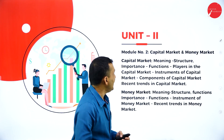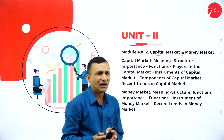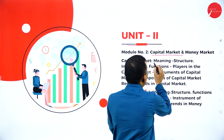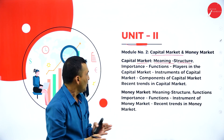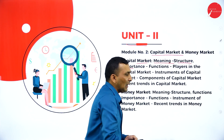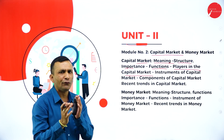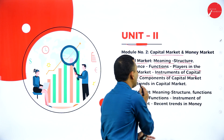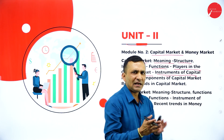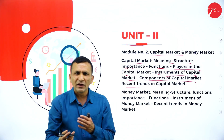Moving to Unit 2 — Capital Market and Money Market. Under capital market, you will study its meaning and structure (for example, the stock exchange), its importance, functions, and the players in the capital market. You will also study the instruments of the capital market — financial products such as shares, securities, and the stock exchange.